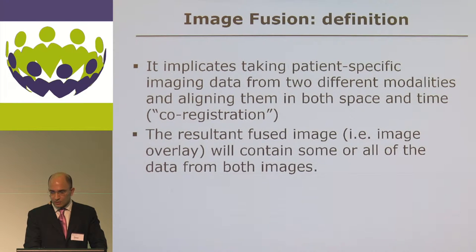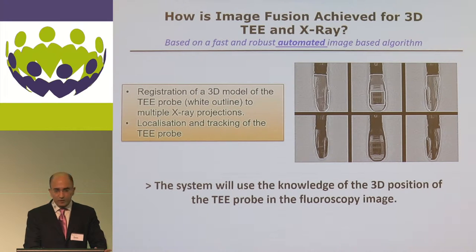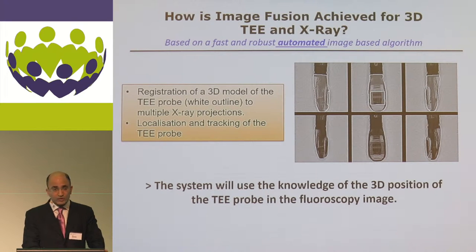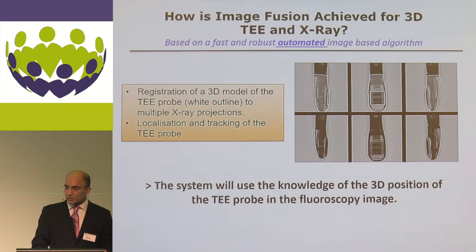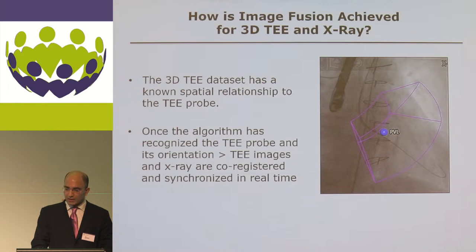The resultant fused image, or image overlay, will contain some or all of the data from both images. For 3D TEE and X-ray, the system is based on a fast and robust automated image-based algorithm. The algorithm uses prior registration of a 3D model of the TEE probe into multiple X-ray projections, allowing the system to localize and track the TEE probe. Since the 3D TEE dataset has a known spatial relationship to the probe, once the probe is tracked, TEE images and X-rays can be co-registered and synchronized in real-time.